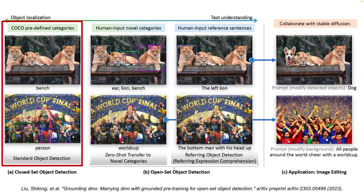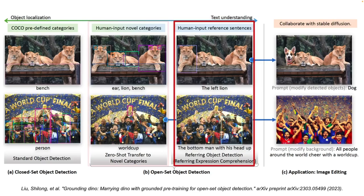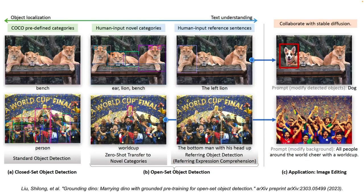We can see in this image taken from the Grounding DINO paper that on the left, which is the closed set object detection, we identify only the objects found in the MS COCO dataset, such as the bench in the upper image or the persons in the lower one. However, as we increase the text understanding of our model, we are able to identify novel categories such as lions or even the World Cup. The latest stage of open set object detection is when we want to identify a very specific object in the image, such as the left lion or the suited man with the heads up. We can do all sorts of interesting things with this functionality, like replacing a certain object in the image with something else using Stable Diffusion — like the example in the upper right where the left lion has been replaced with a dog.